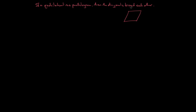Here's my parallelogram I'm going to reference, with vertices A, B, C, and D. A diagonal of any polygon is just a segment that connects non-consecutive vertices. So in this case, A to C, that segment, or D to B. The reason I say non-consecutive is that a segment connecting A to B is just a side, so that's not a diagonal.